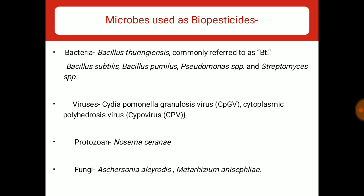Microbes that are used as biopesticides: following are the microorganisms used as biopesticides. In the case of bacteria, Bacillus thuringiensis is the most commonly used biopesticide globally. Along with this, species of Bacillus, Pseudomonas, and Streptomyces are also used as biopesticides. Even viruses, protozoa, and fungi also play an important role as biopesticides.